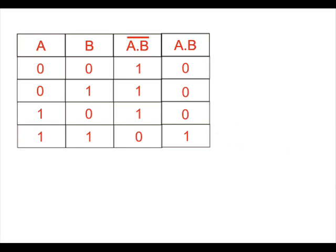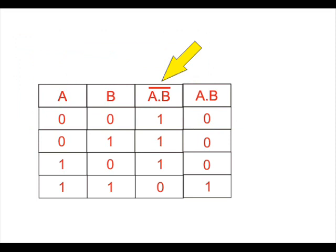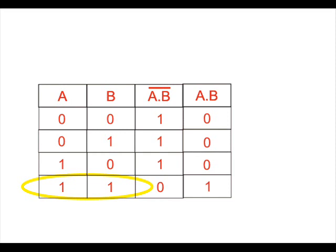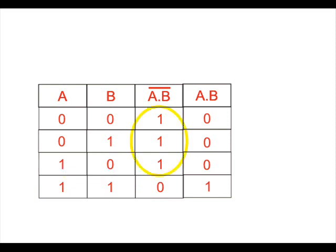A NAND gate actually means NOT AND gate, which means the output of this gate is just the reverse of that of a similar AND gate. The output of the AND gate is only high or 1 when all the inputs are high or 1; in all other cases the output is low or 0. In the case of NAND, the case is just opposite: the output is only low or 0 when all inputs are 1, and in all other cases the output of the NAND gate is high or 1.